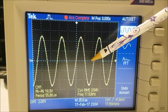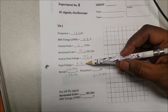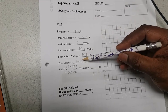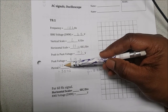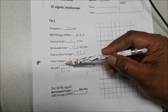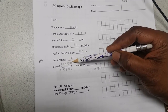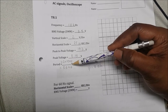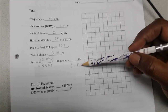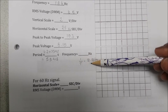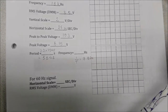For one full wave to complete, it takes 2.2 divisions. The peak voltage is 10.3 divided by 2, giving 5.15 volts. The period is 2.2 divisions on the x-axis and the horizontal scale is 25 microseconds. Multiplying gives 55 microseconds, and 1 over T gives 18.18 kilohertz.